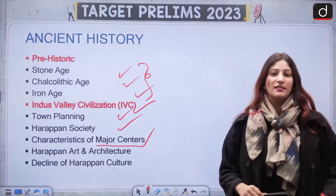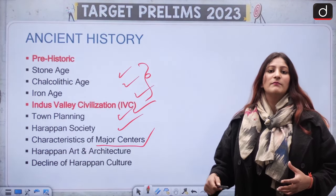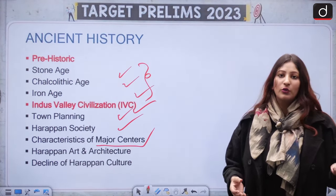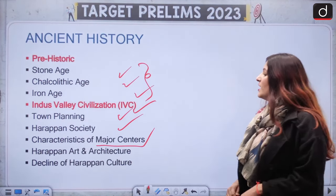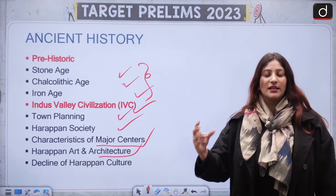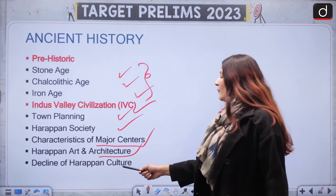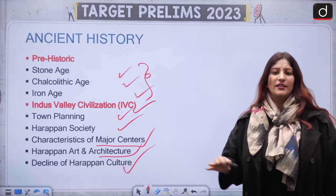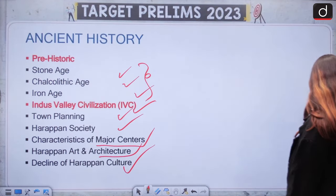What are the significance of Dholavira, Lothal, Ropar, and Alamgirpur? Apart from that, Harappan art and architecture — which artifact was discovered from where, what kind of materials were they using, what were the reasons for decline, and when did it start declining? These are theoretical but factual information is also important from the perspective of prelims.